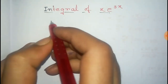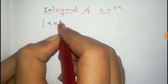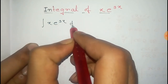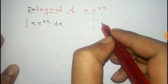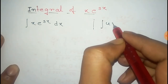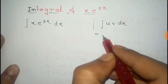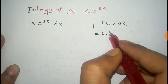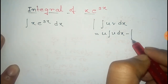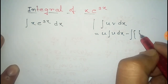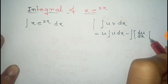In this video we will find the integral of x·e to the power 3x, that is ∫x·e^(3x) dx. To find the integral we use the formula for integration by parts: ∫uv dx = u·∫v dx − ∫(derivative of u · ∫v dx) dx.